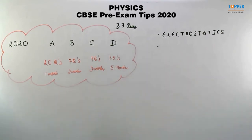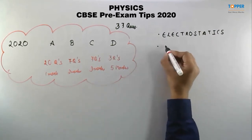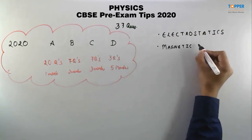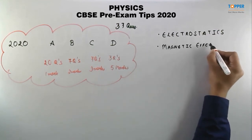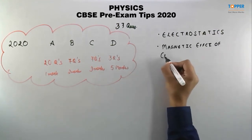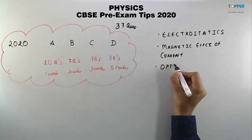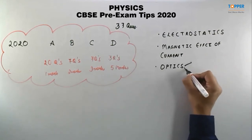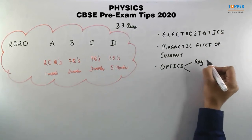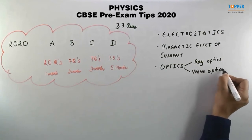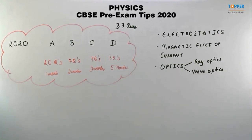The next topic is the magnetic effect of current. This is again one of the most important topics. Next is optics - both ray optics as well as wave optics are very important topics.